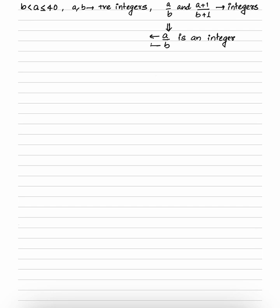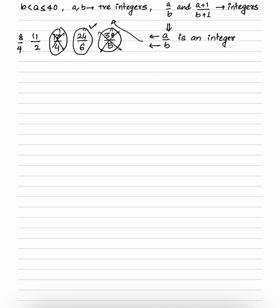Let's take a few positive integers and see. Say a is 39 and b is 5, a is 24 and b is 6, a is 17 and b is 4, a is 11 and b is 2, a is 8 and b is 4. Checking which are integers — 8/4 is an integer, 24/6 is an integer, but others are not. The observation is: for a/b to be an integer, a must be a multiple of b.